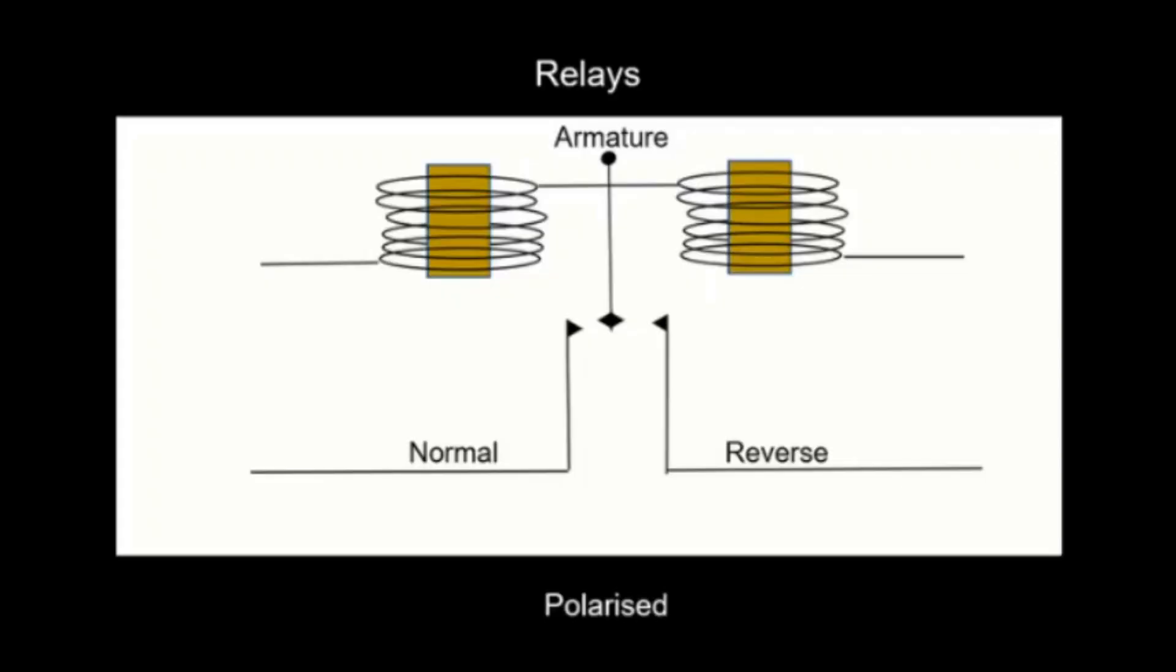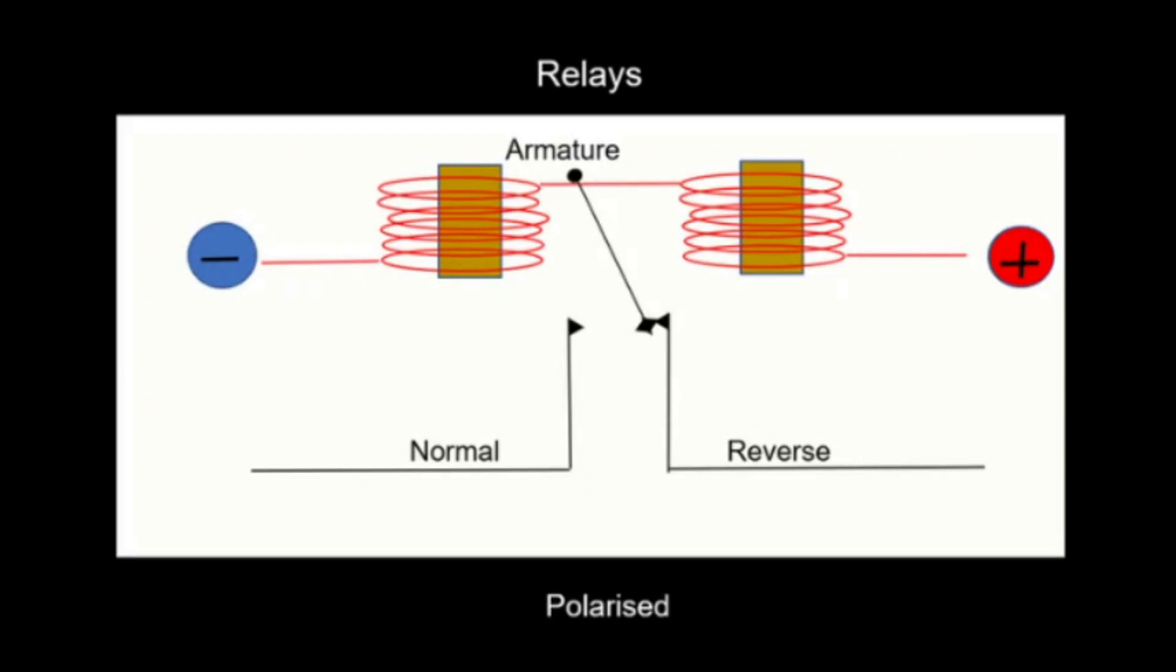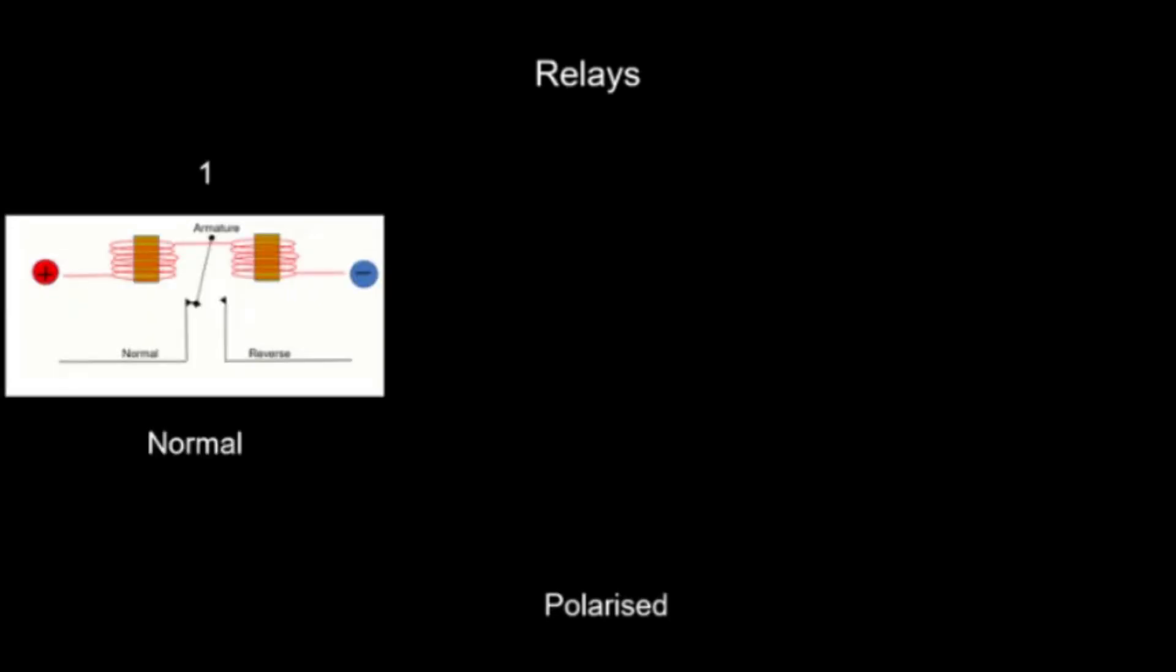One method of achieving the proving of three possibilities is to replace the non-polarised relay with a polarised relay. This relay, as its name suggests, is polarity dependent. If we energise the coil of the relay with the polarity reversed, the armature will move in the opposite direction. A polarised relay is therefore able to detect three positions.